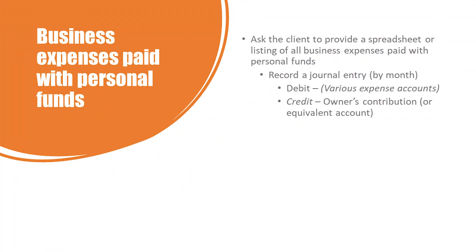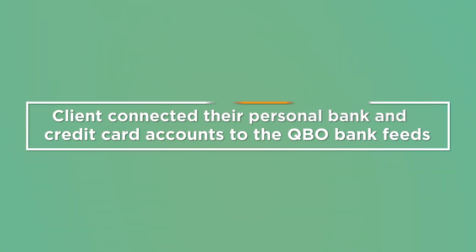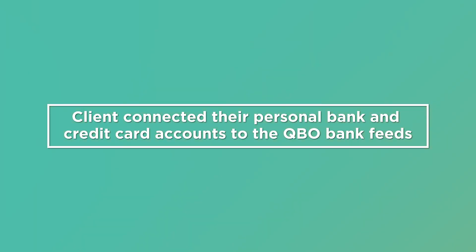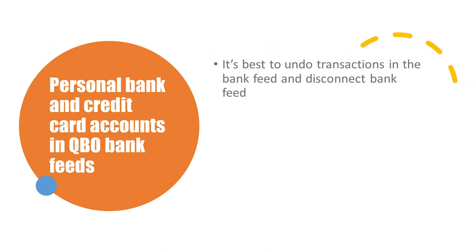Your client may have also paid for business expenses with personal funds. In that case, ask the client to provide a spreadsheet or a listing of all business expenses that were paid for with personal funds. Then you'll need to record a journal entry by month — debit all of the various expense accounts and credit owner's contribution or an equivalent account. If your client connected their personal bank and credit card accounts to the QBO bank feeds, it's best to undo transactions in the bank feed and disconnect the bank feed.